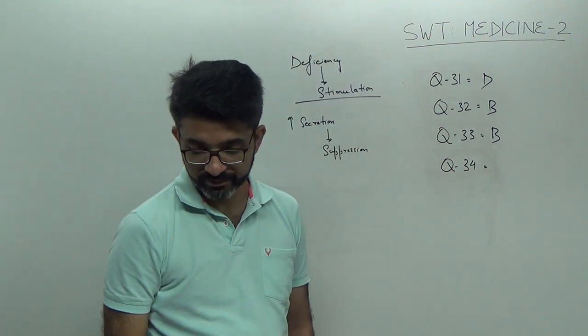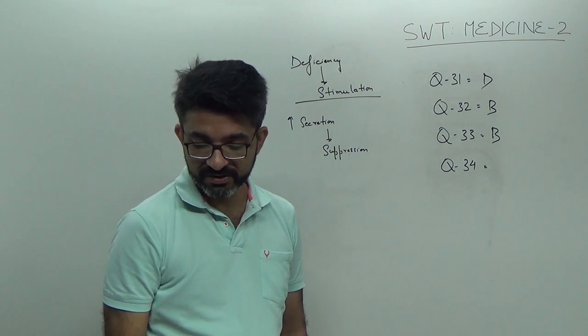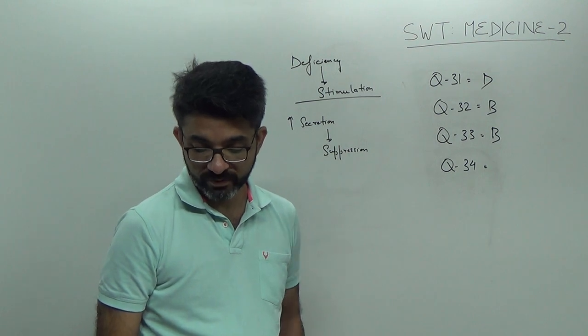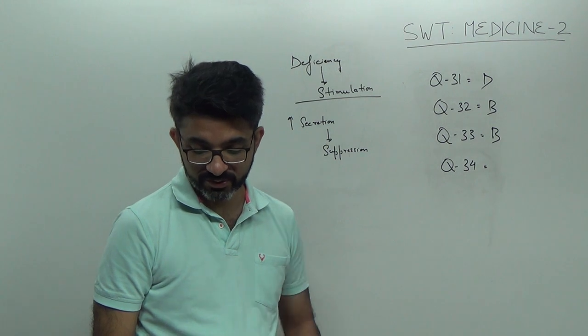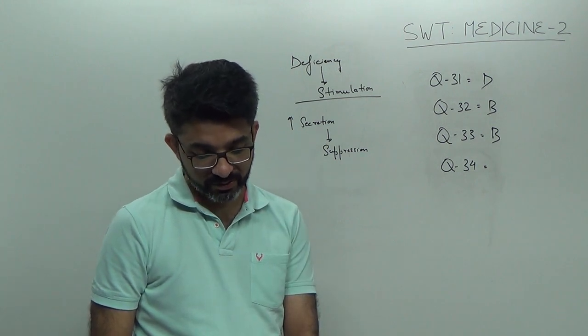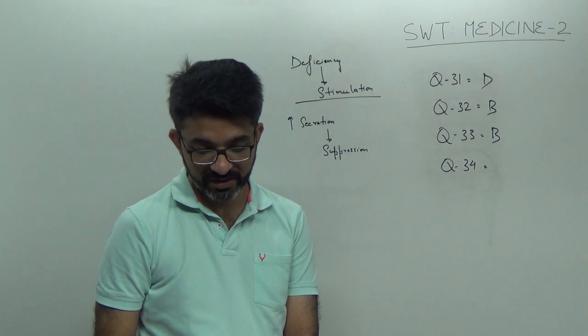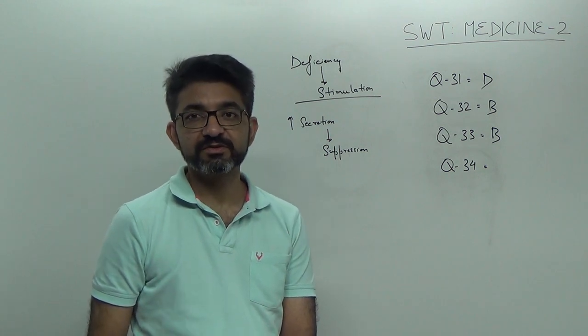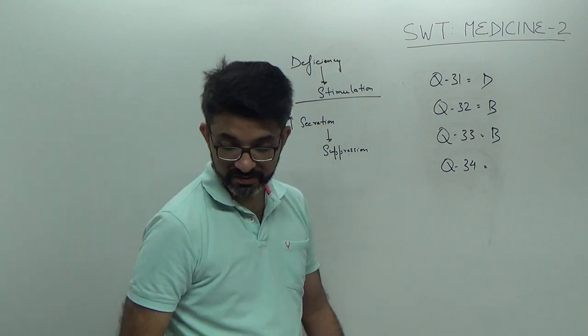Question number 34. This lady has polydipsia, polyuria, the blood pressure is normal, there is no postural drop of blood pressure. Sodium is slightly low, urea is normal, blood sugar is normal and plasma osmolality is also low normal. Right. So, once you have a low serum sodium and plasma osmolality which is either normal or low, in a patient of polyuria, so diagnosis is psychogenic polydipsia. So, the answer is D.